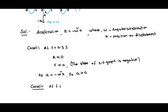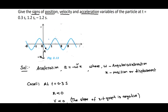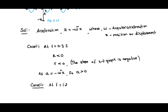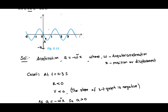At t equal to 1.2 seconds, the position of the particle will be somewhere at point B. Between 1 and 2, here exactly 1.5, it is less than 1.5 at B. The position is along the positive x-axis, so x will be positive or more than 0. And velocity also will be more than 0. But while coming to acceleration, it will be negative.